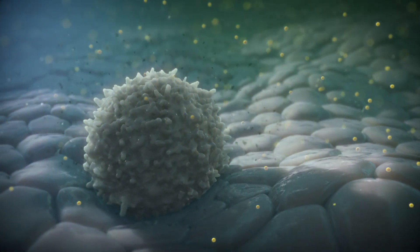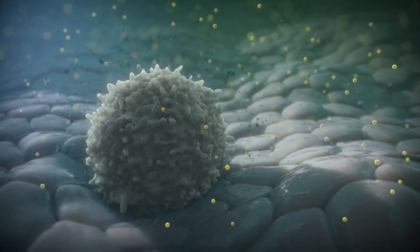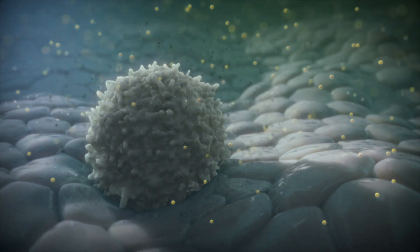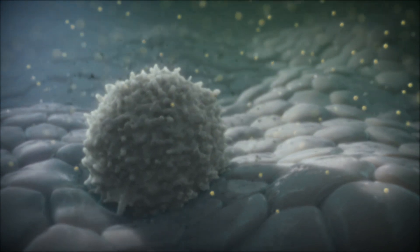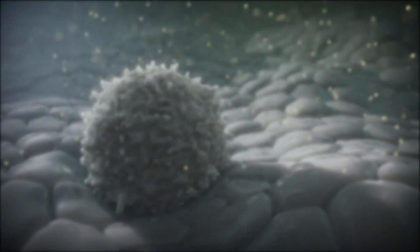Once HIV has reduced the body's T cell count below a critical level, approximately 200 cells per cubic millimeter, the immune system is compromised and becomes susceptible to infection and disease.